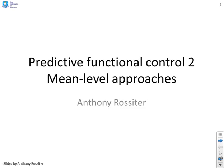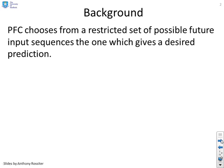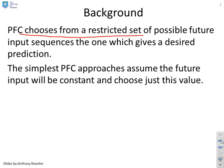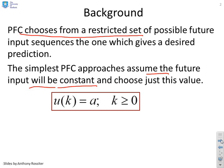This video looks at mean-level approaches for predictive functional control. Some background then. In the first video, what we discovered is that PFC chooses from a restricted set of possible future input sequences, and it chooses the one which gives a desired prediction. The simplest PFC approach assumes that the future input will just be a constant.